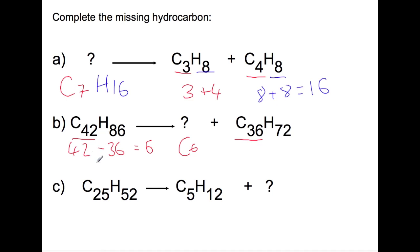We're then going to look at the hydrogens. We start with 86. Our other chain has 72 which means that we have 14 hydrogens left.